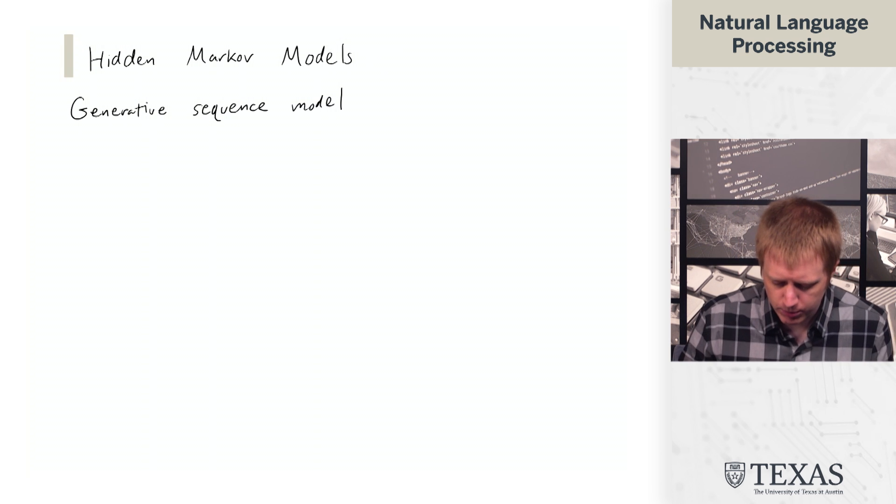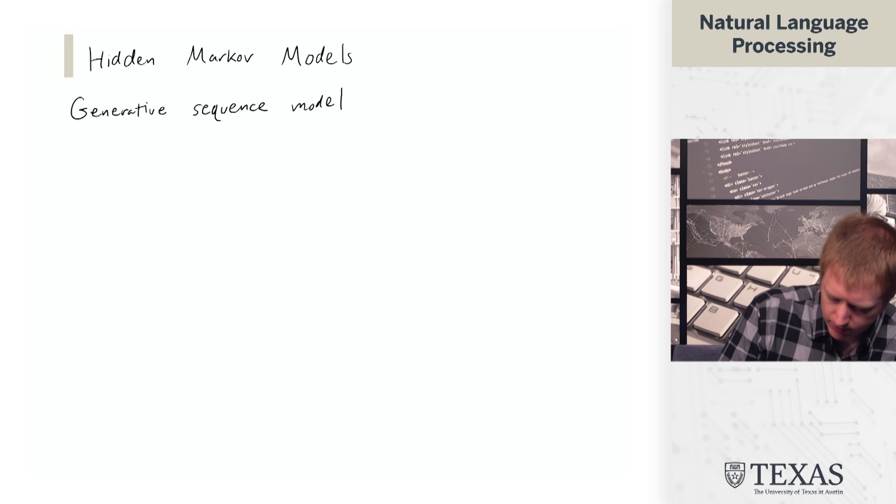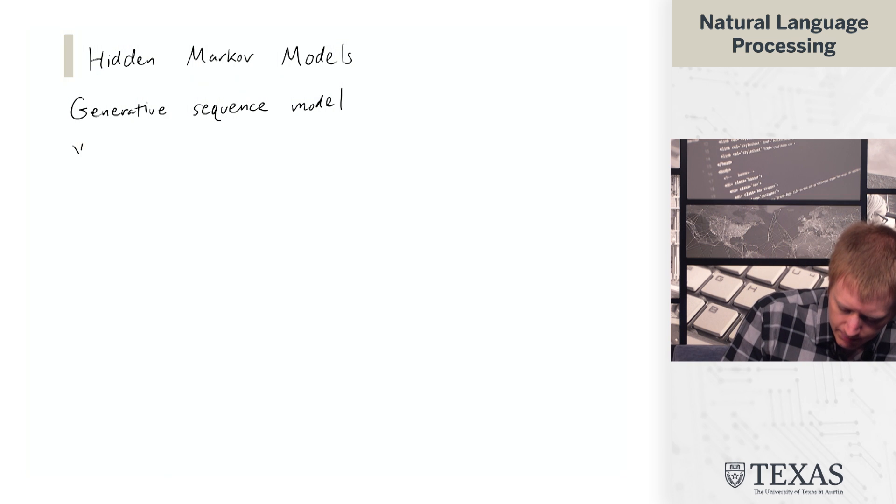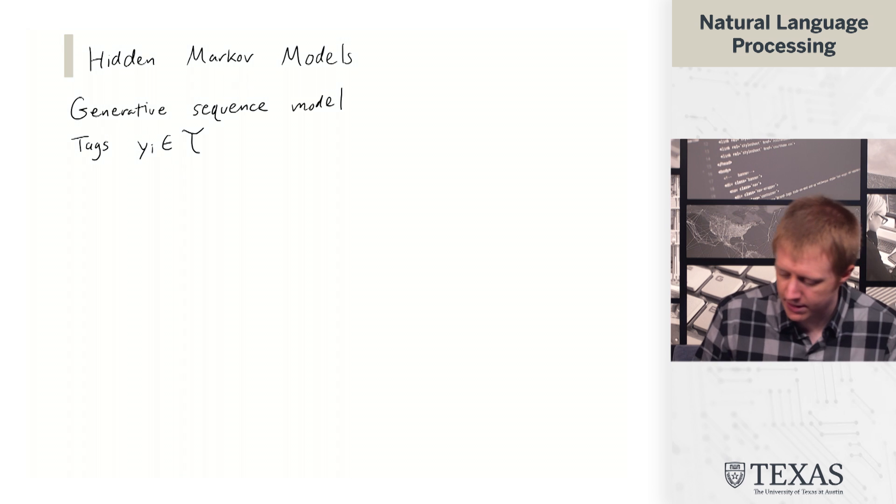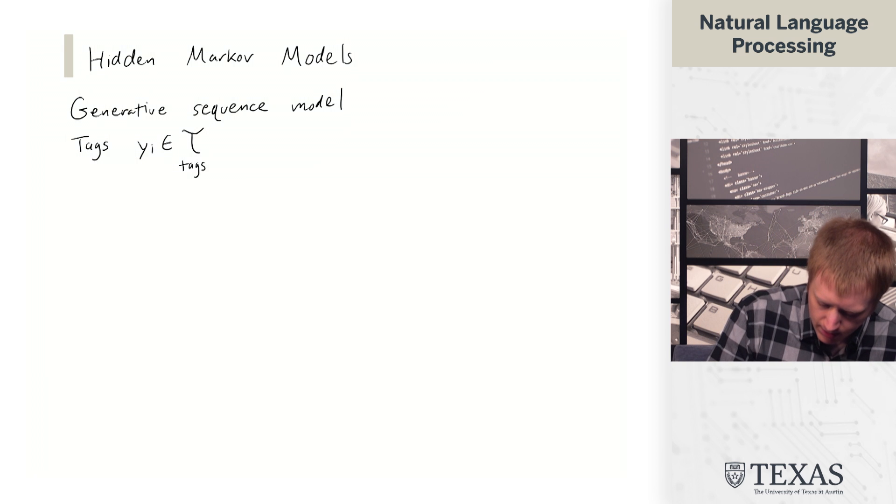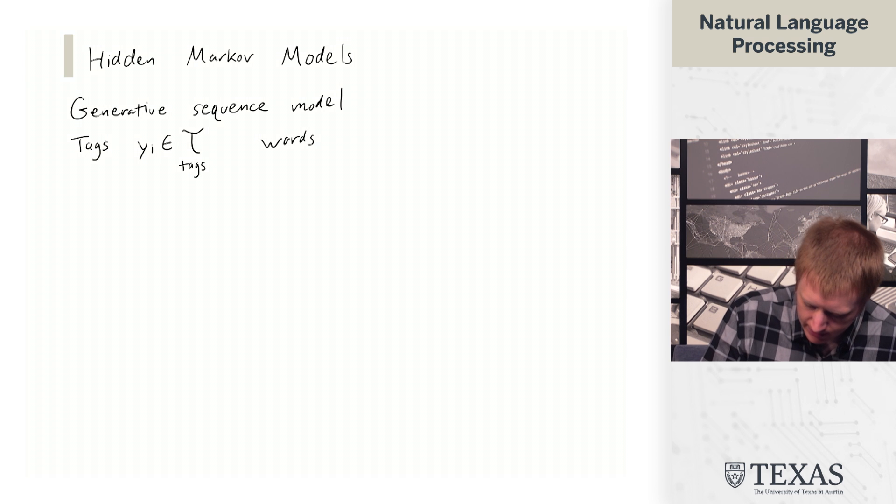So first, we have basically two types of objects here. We have tags, yi, which we're going to say are in this tag set T. And we have words, xi, which are in a vocabulary V.